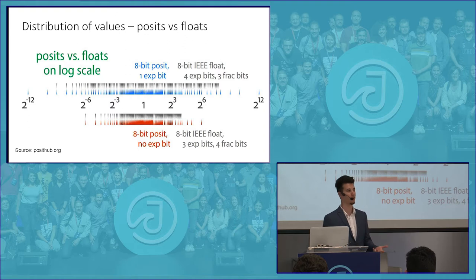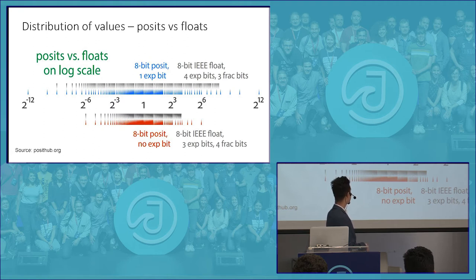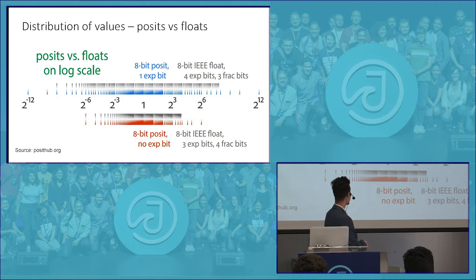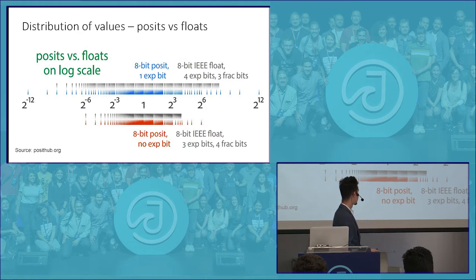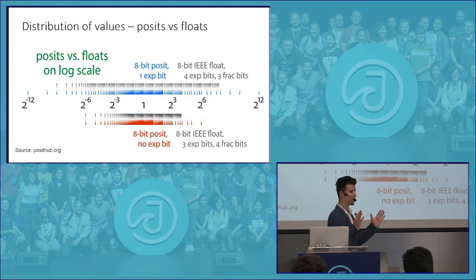A key selling point is the value distribution. Comparing 8-bit IEEE floats with 8-bit Posits configured with 1 exponent bit — versus the 4-3 configuration for IEEE float — we see that Posit values gravitate more towards 1, which matches real-world number crunching needs. We need more precision around 1. If you need very high or very low numbers, you can configure the Posit accordingly. With no exponent bits, the Posit gets crammed into a smaller space around 1, giving higher precision in that range.